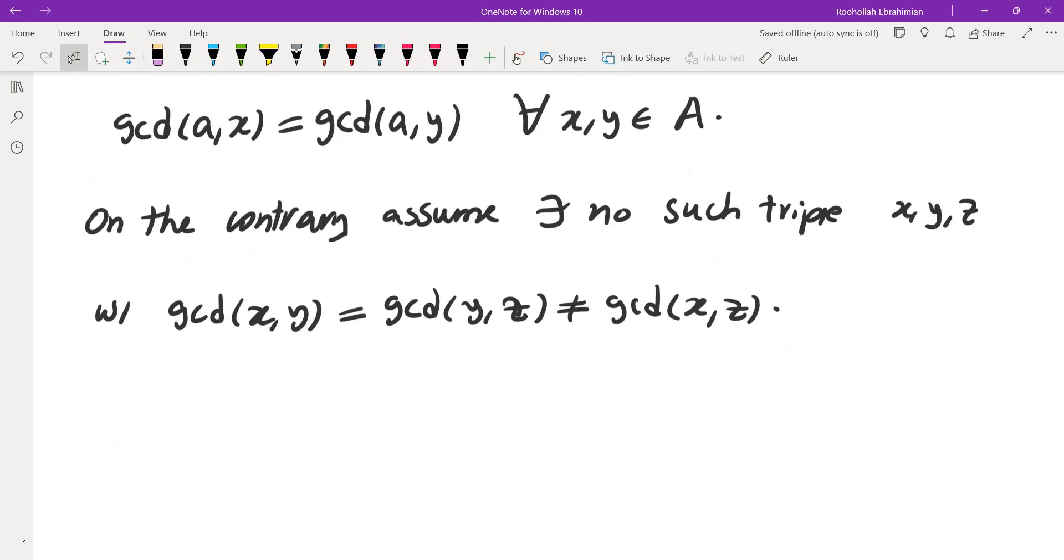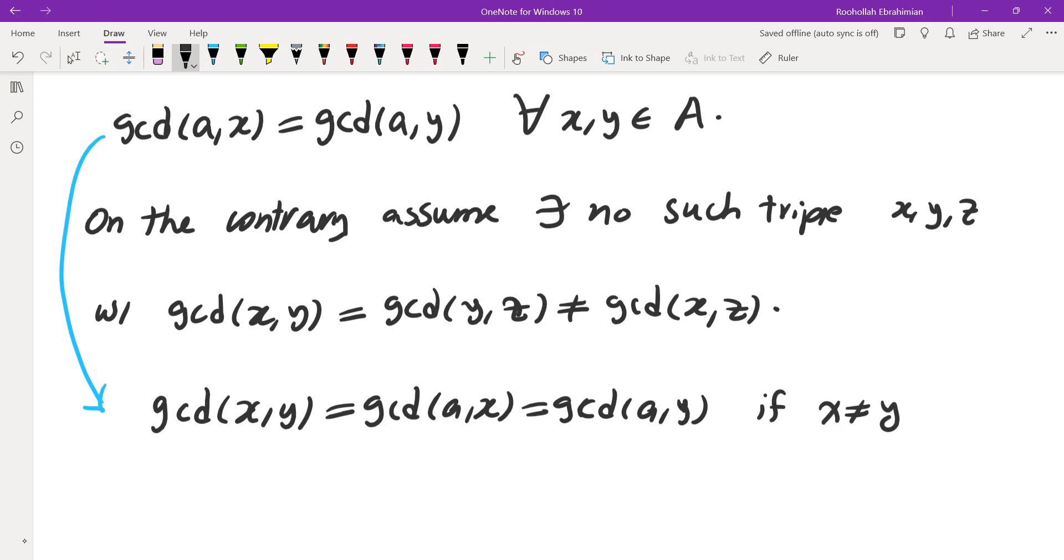So now that tells me that because these two are the same and I'm using proof by contradiction, the third one must also be the same. So gcd(X,Y) must be the same as gcd(A,X) and must be the same as gcd(A,Y) if X is not the same as Y.